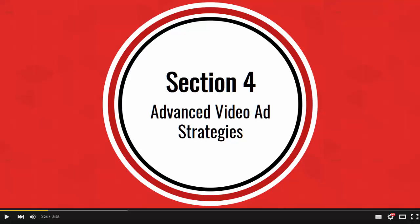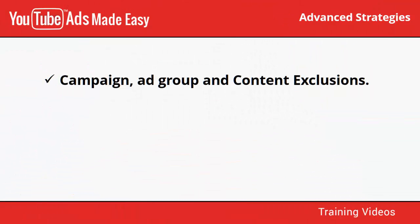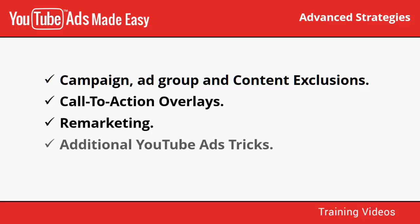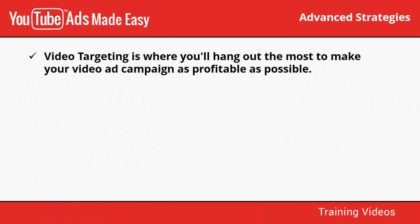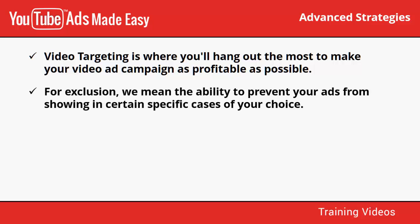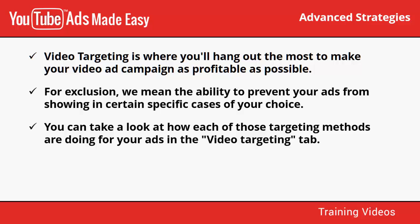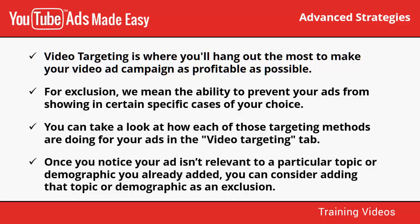Welcome to section four of our YouTube ads video training. In this section we will talk about campaign, ad group, and content exclusions, calls to action overlays, remarketing, and additional YouTube ads tricks. Video targeting is where you'll hang out the most to make your video ad campaign as profitable as possible. One way to optimize your campaign is by using the exclusions option — the ability to prevent your ads from showing in certain specific cases of your choice. There are six different targeting methods you can apply to narrow your targeting to exactly the audience of your choice.